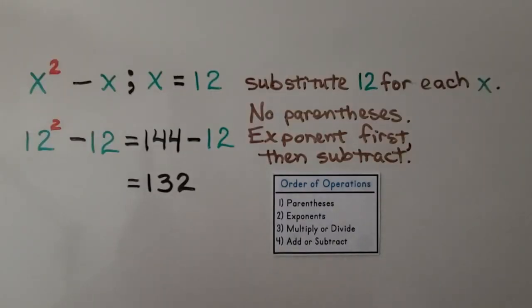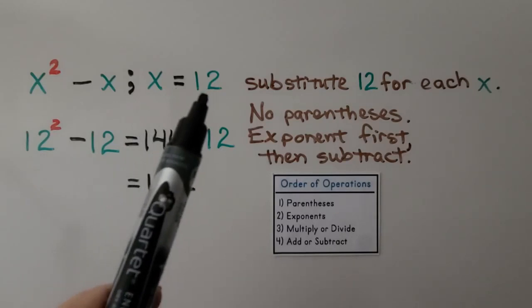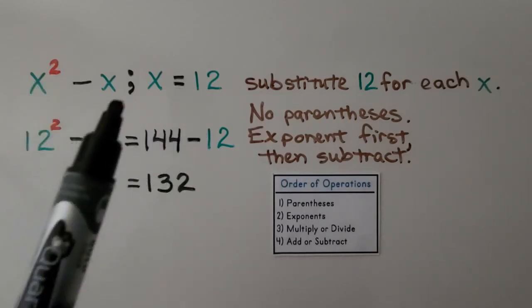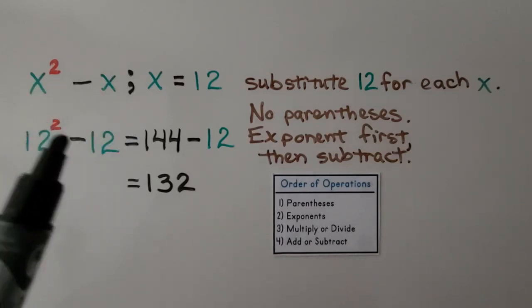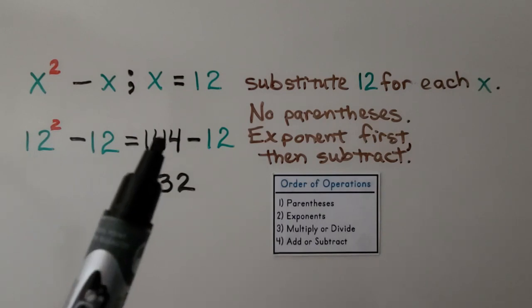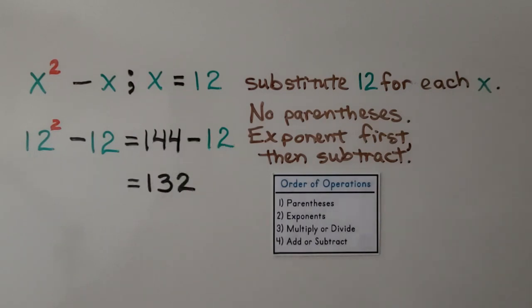Here we have x raised to the second power minus x, and x is equal to 12. We substitute 12 for each x: 12 squared minus 12. 12 times 12 is 144, and 144 minus 12 is 132. There were no parentheses, so we did the exponent first, then subtracted.